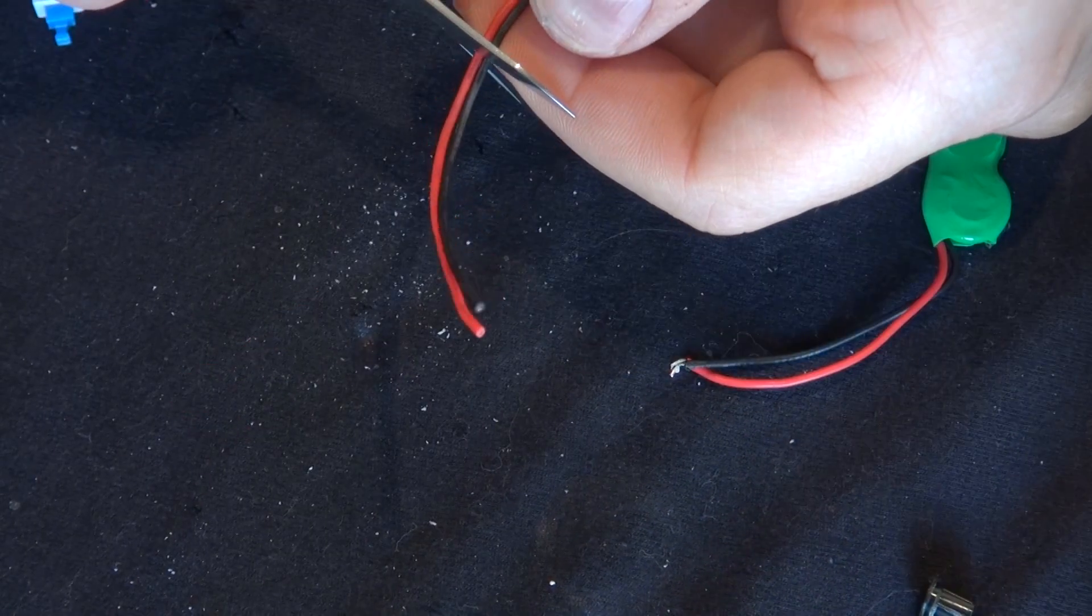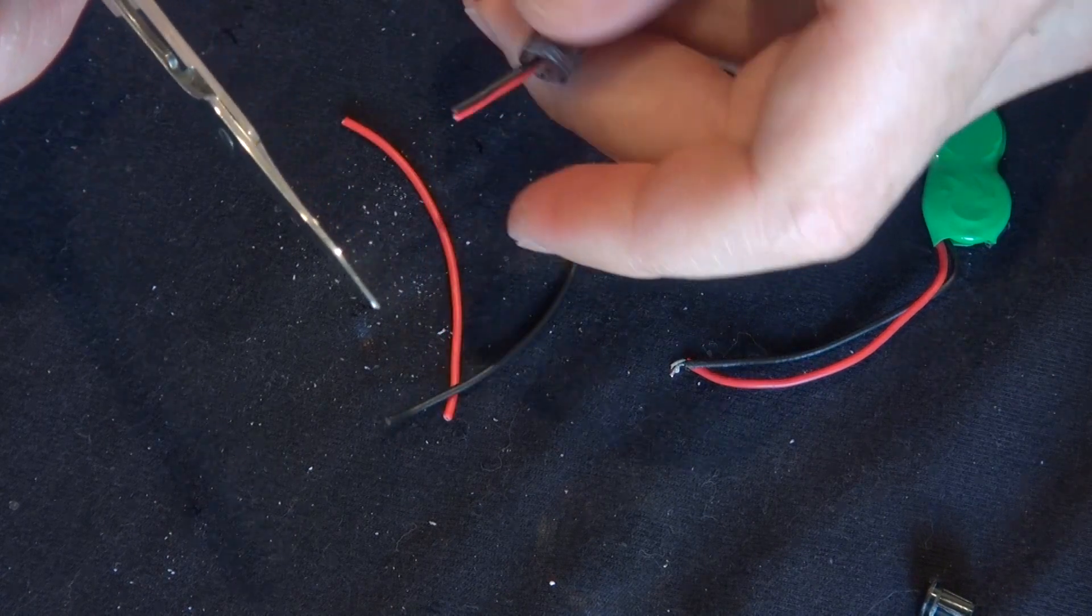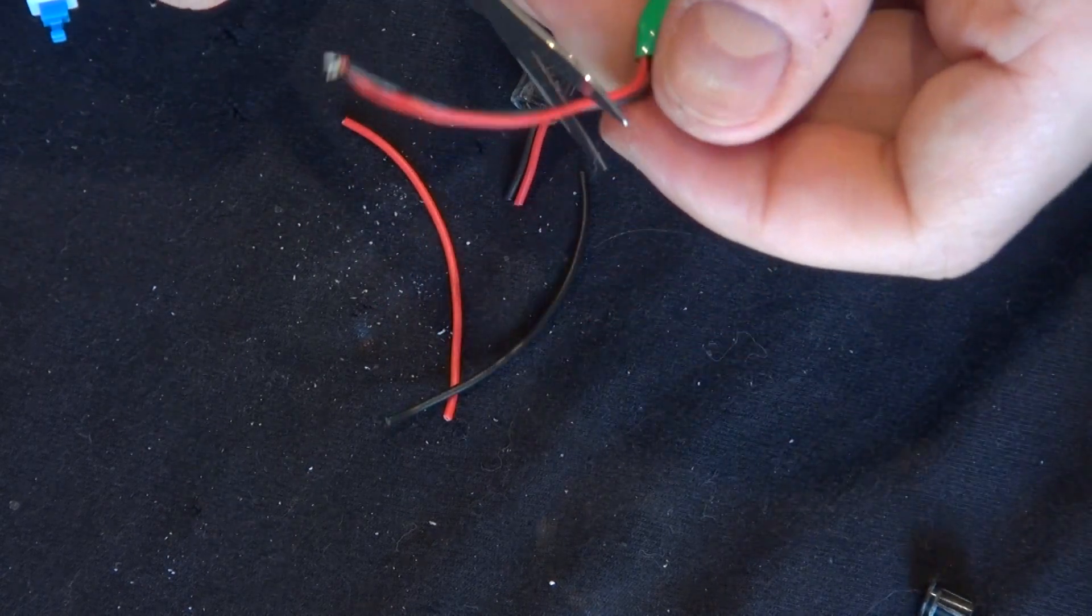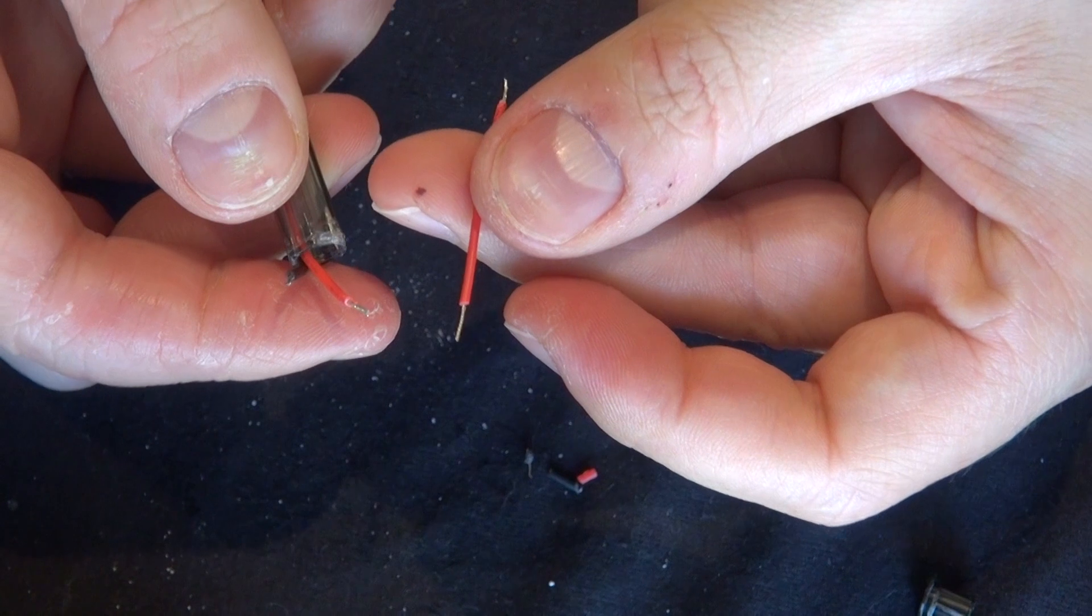Now you have your two wires sticking out of the end of the pen. It seems to be too much wire, so I'm going to cut off the excess. Same thing for the battery part.